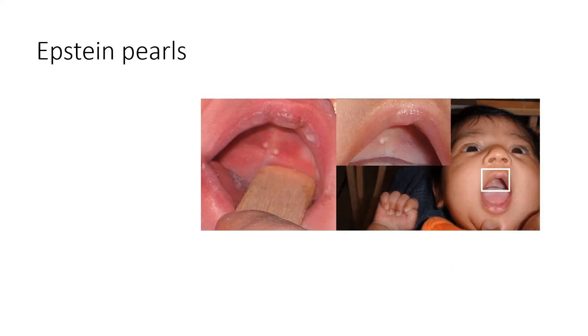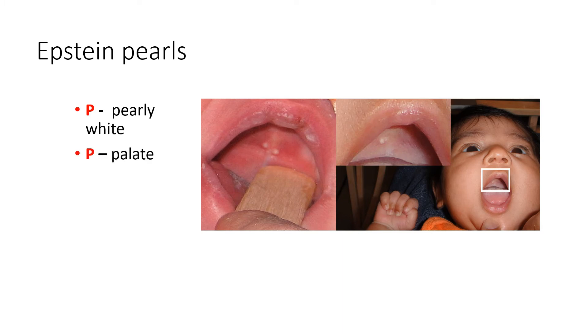Next comes Epstein pearls. Here we have to remember this with three P's. The first P stands for pearly white. The second P is for palate. And the last P is for prepuce.